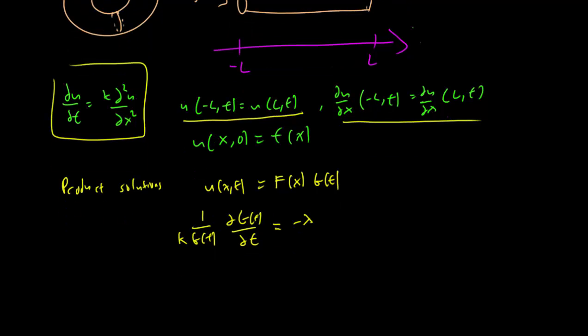And this gets us the same solution we always got. We have that g(t) is equal to e^(-λkt). We set the constant in front as 1, as usual, to make things a little bit easier.